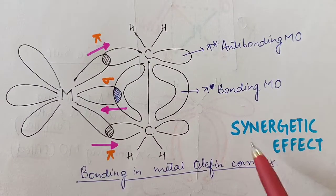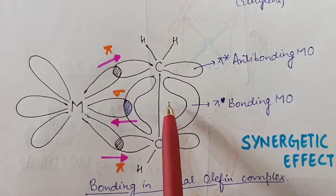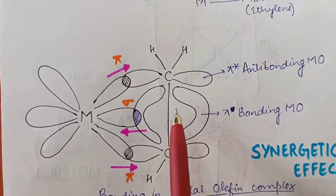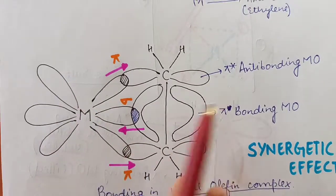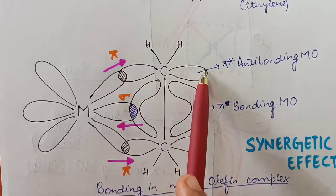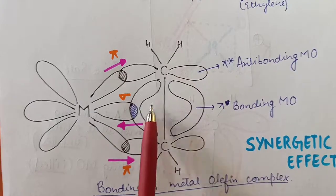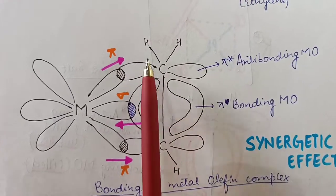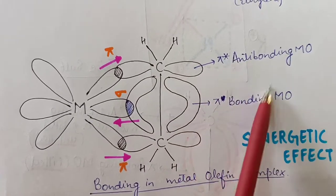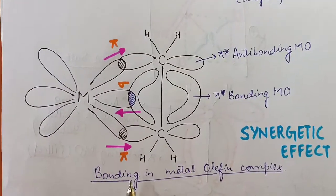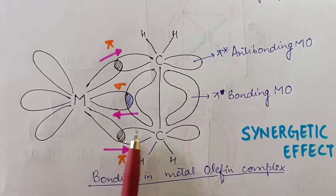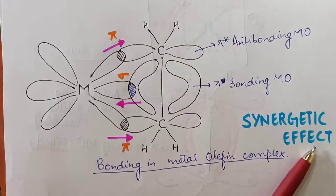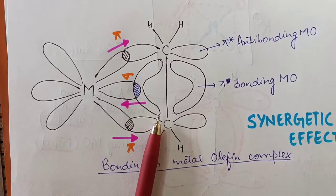This creates a synergic effect, which is why the metal-ethylene bond is electroneutral. The forward donation and back bonding balance the electron density on both the metal and ethylene. Back bonding occurs into the pi* antibonding molecular orbitals of carbon, while the forward donation comes from the pi bonding molecular orbitals. This is how bonding in the metal olefin complex takes place.